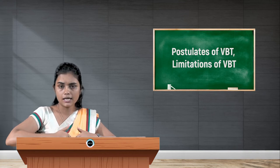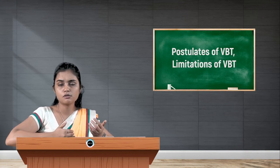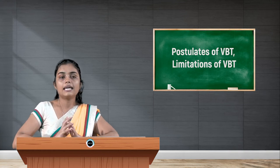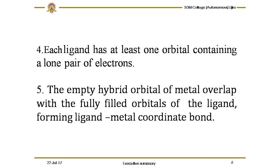The next postulate states that each ligand must possess at least one orbital containing a lone pair of electrons. An atom can be called a ligand only when it possesses at least a single lone pair of electrons to donate to the central metal ion.